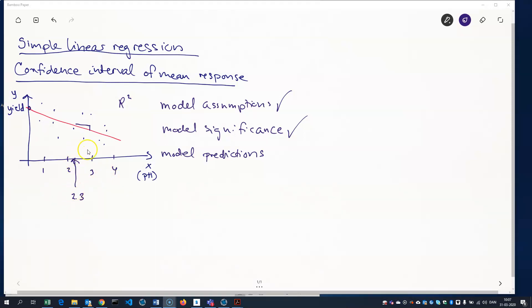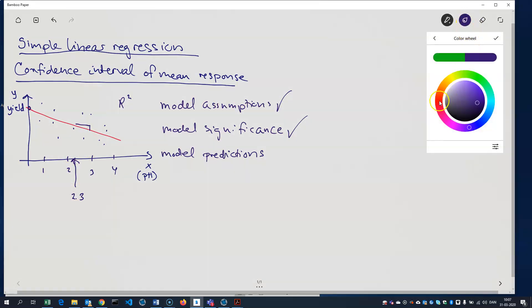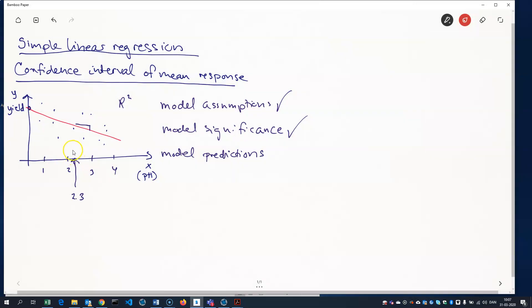In other words, what does our model predict that the yield will be? So, let's just change the color here. Well, the first step would be to read off from the model what yield is expected. So, I'll call this one x naught, and this one would then be y naught.